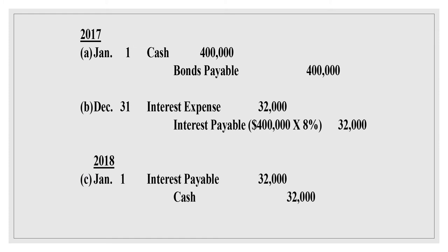On January 1, 2017: Cash debit $400,000; Bonds Payable credit $400,000. Adjusting entry on December 31: Interest Expense debit $32,000; Interest Payable credit $32,000 — which is $400,000 face value times 8%. On January 1, 2018: Interest Payable debit $32,000; Cash credit $32,000.